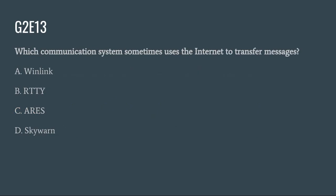G2E13: Which communication system sometimes uses the internet to transfer messages? A. Winlink. B. RTTY. C. ARES. Or D. Skywarn. The correct answer is A: Winlink.